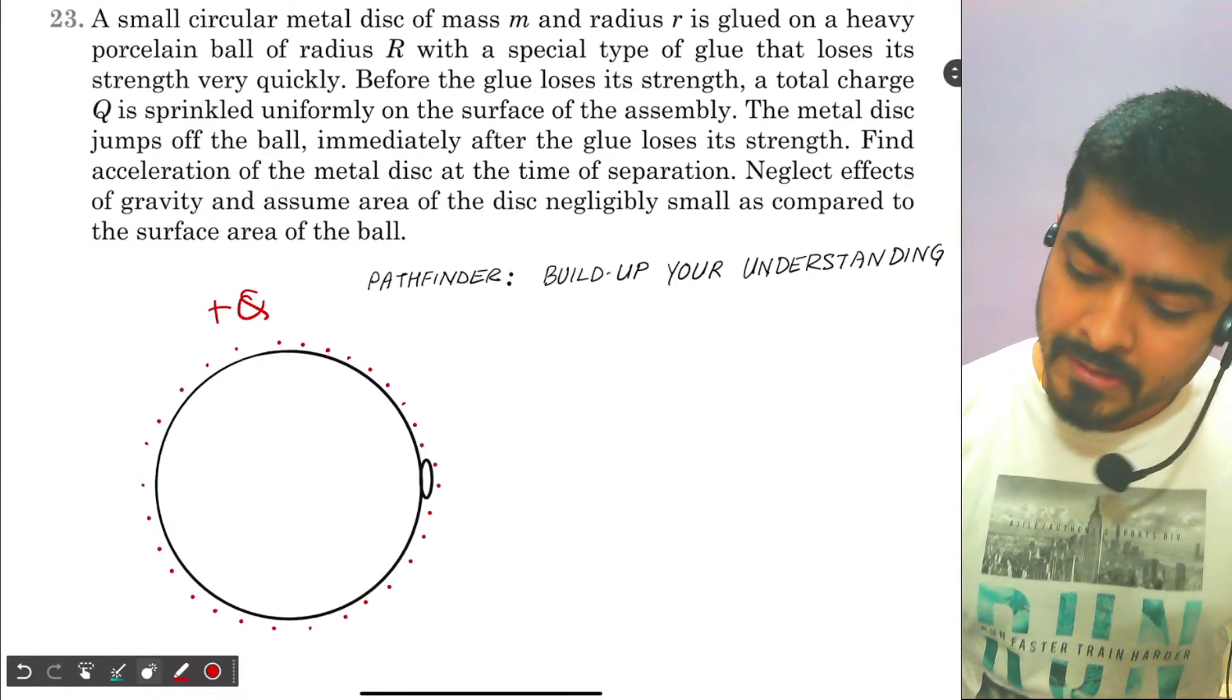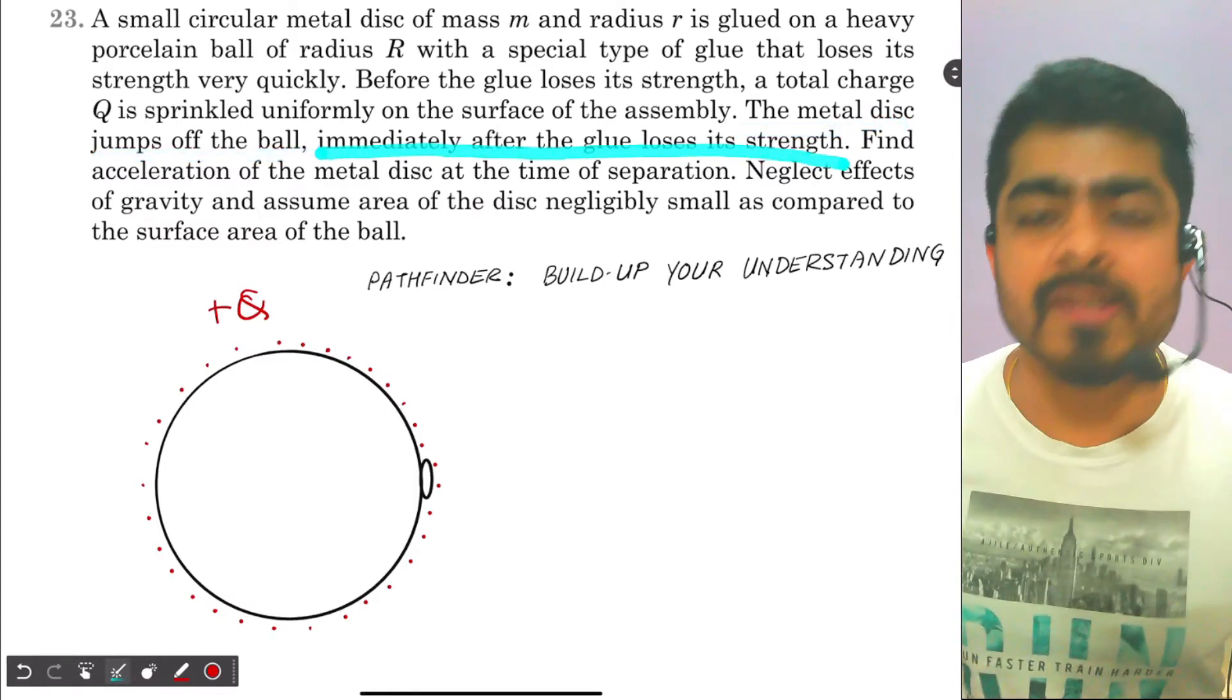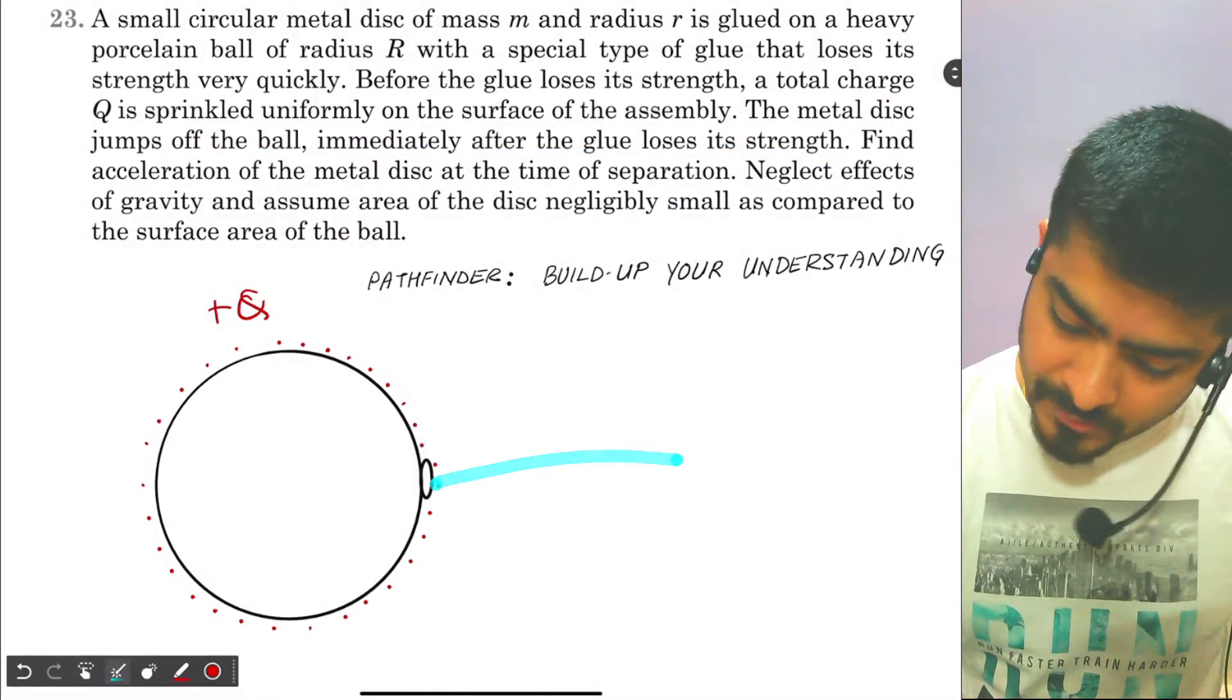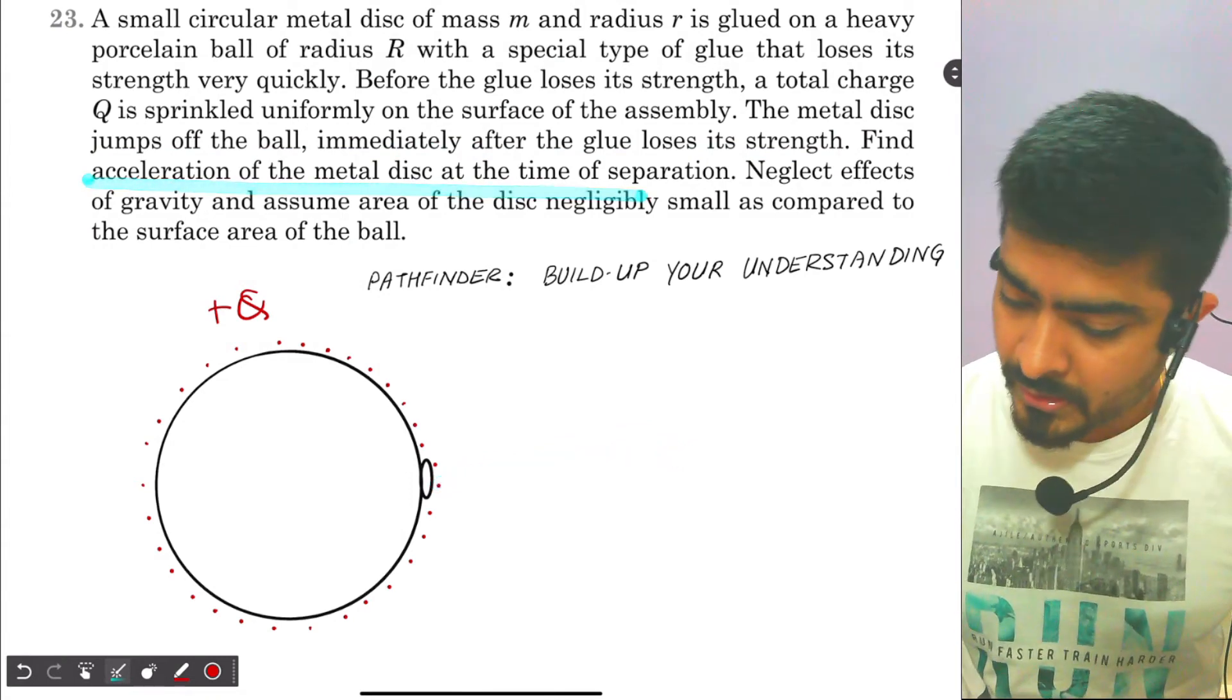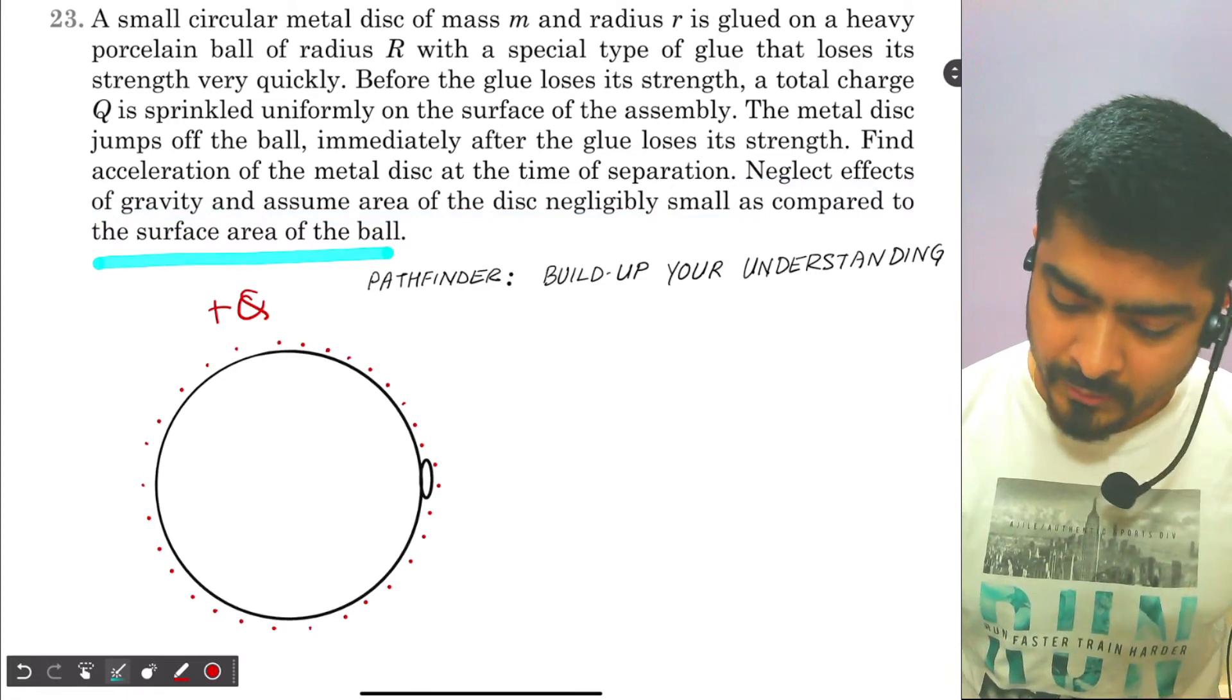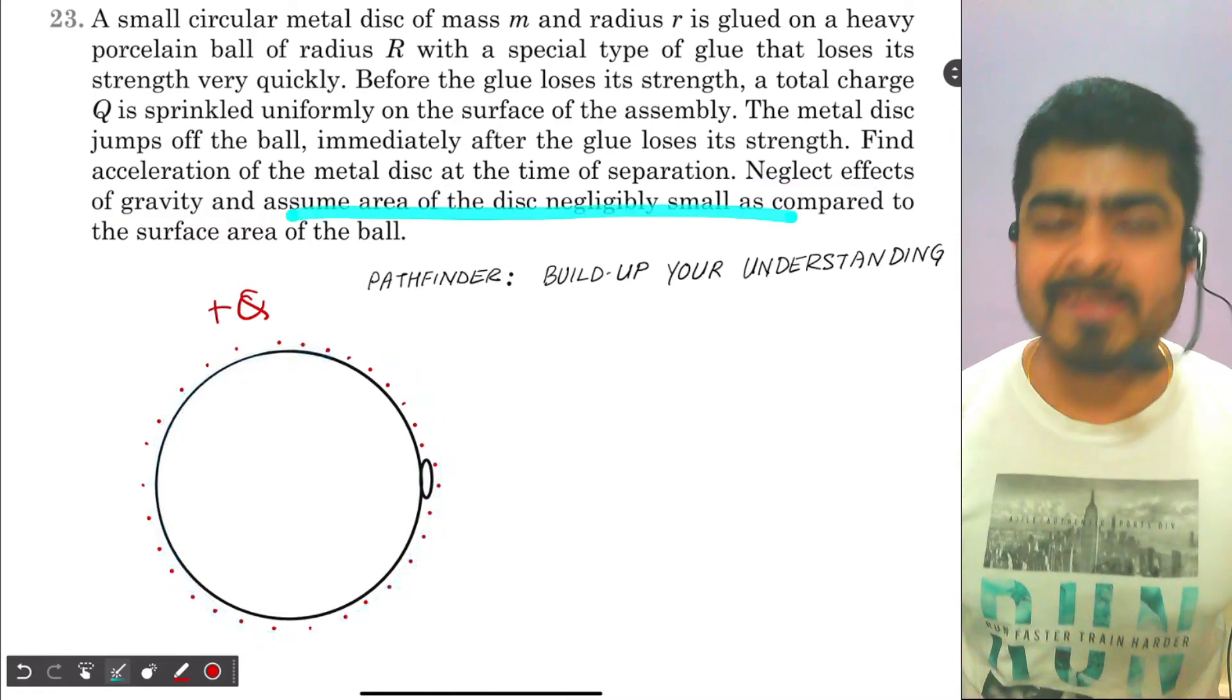The metal disc jumps off the ball immediately after the glue loses its strength. Now the glue is losing strength, so this disc will jump off. Find the acceleration of the metal disc at the time of separation. Neglect effects of gravity and assume area of the disc negligibly small as compared to the surface area of the ball. That's why I have drawn a very small disc over here as compared to the ball, because the area of the disc is negligibly small.